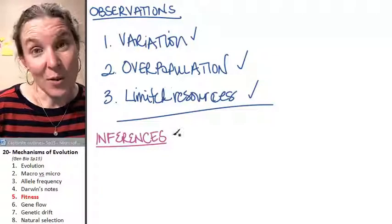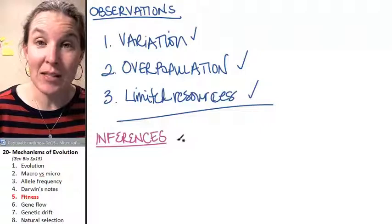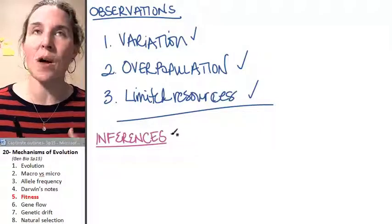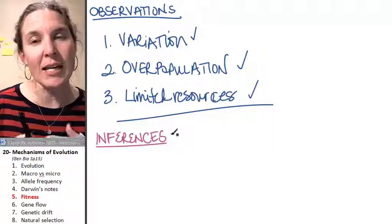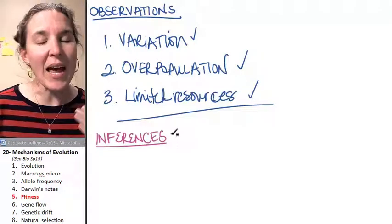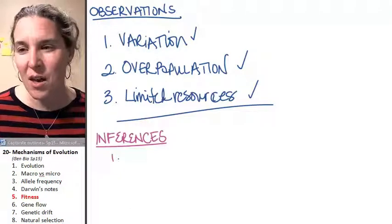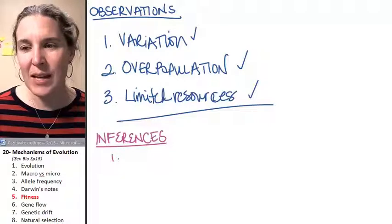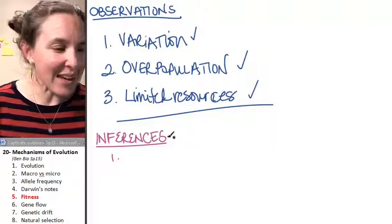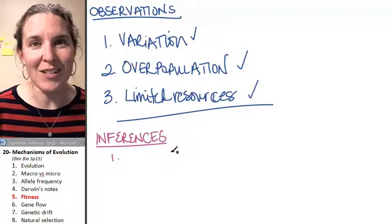So Darwin had these observations. Based on those observations, he made some inferences. His inferences were almost like conclusions that he drew based on the observations that he made. And the first inference that he made, the first thing that he thought of where he was like, you know what, if all of these are true, then some critters are going to be more likely to survive than others.